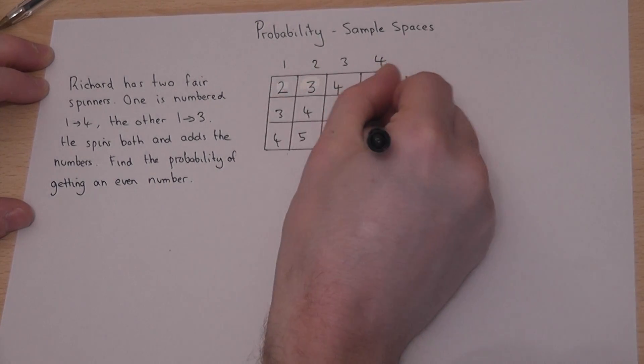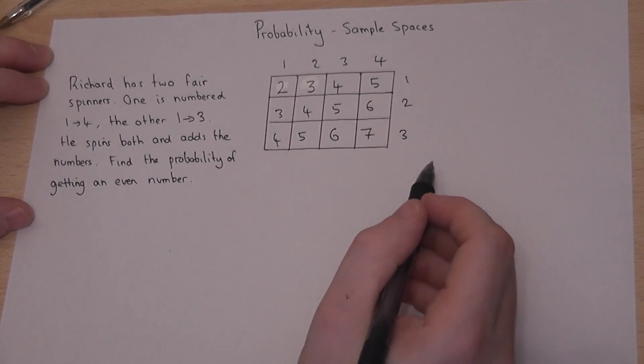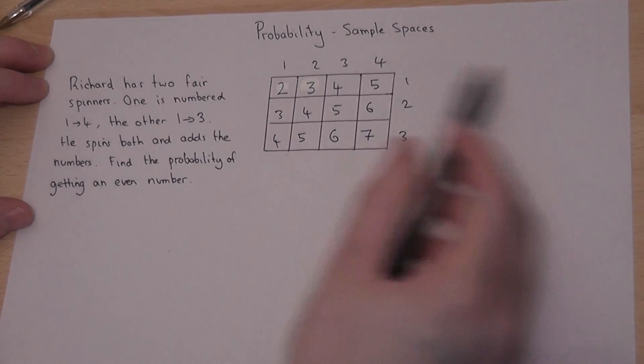These are all the possible outcomes which are all equally likely because they were fair spinners.